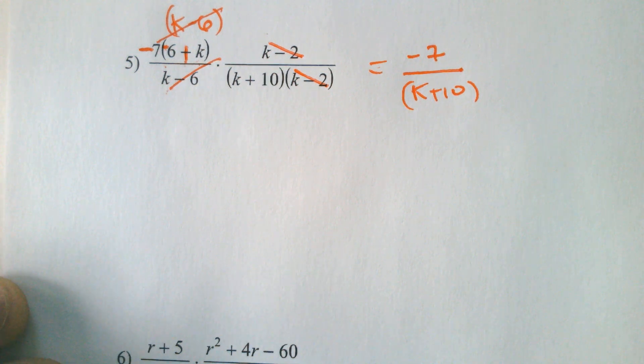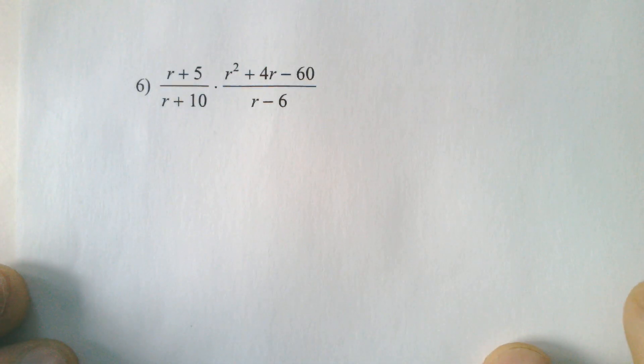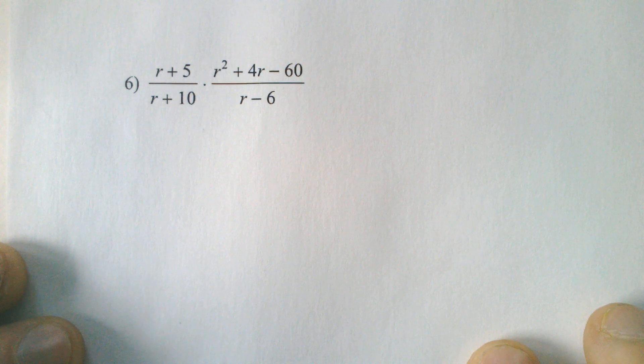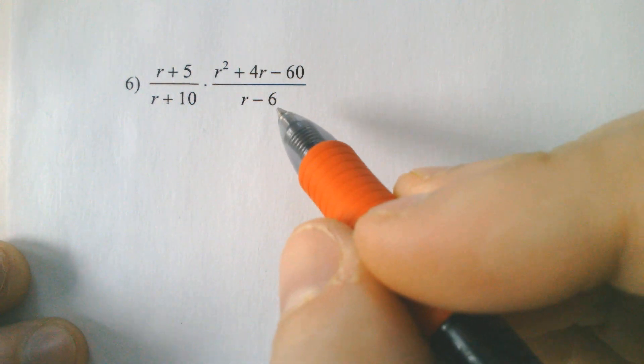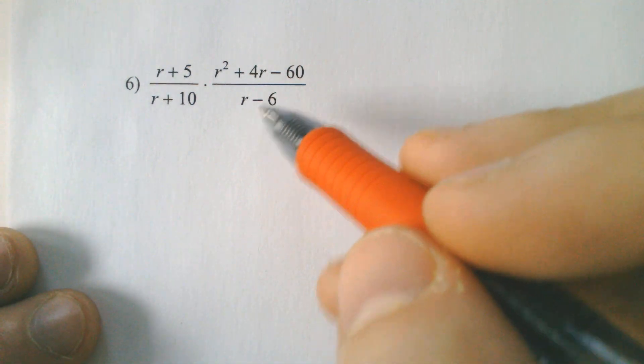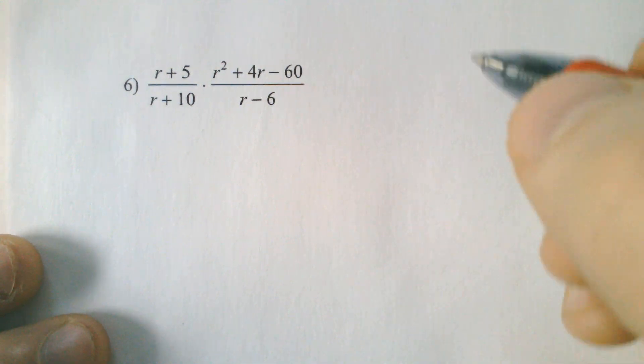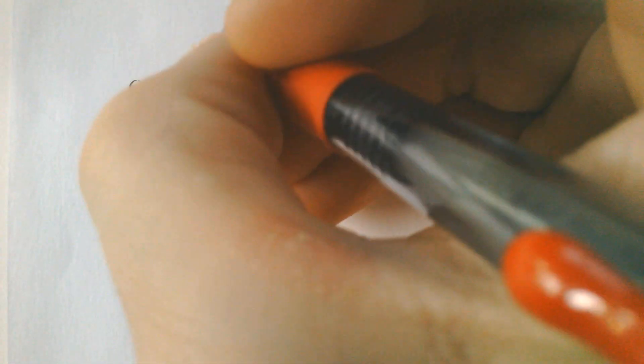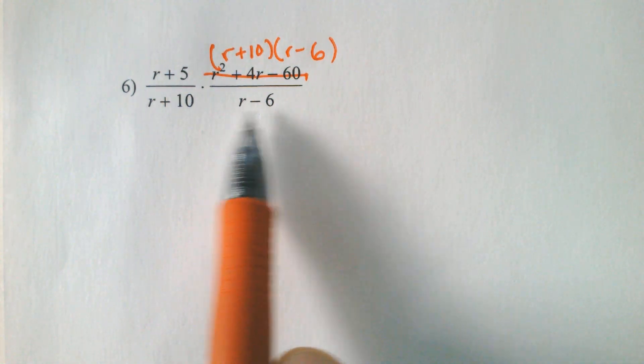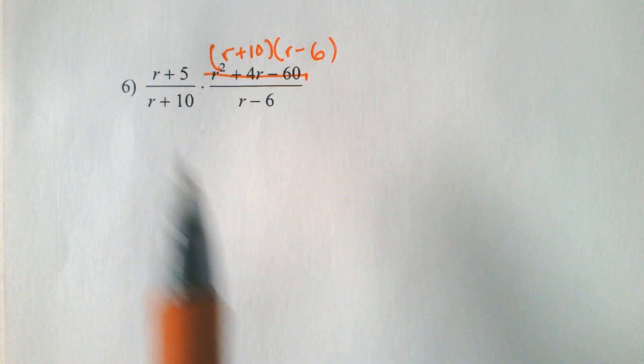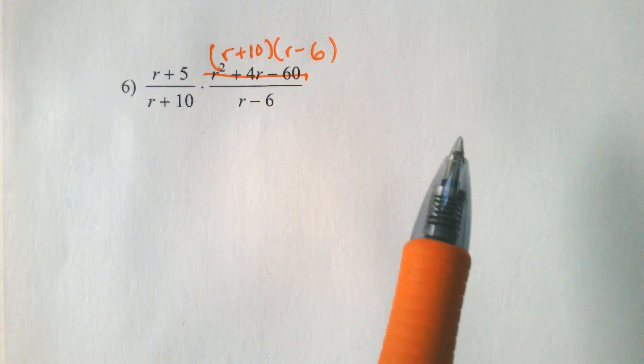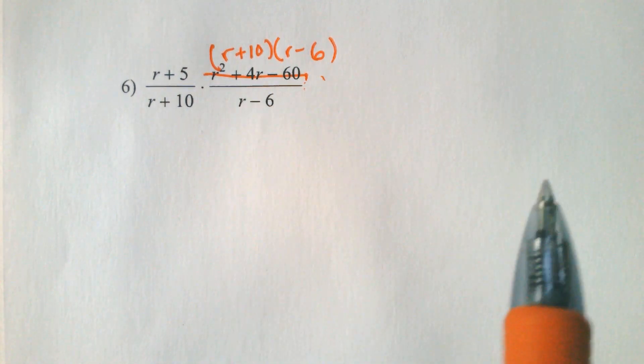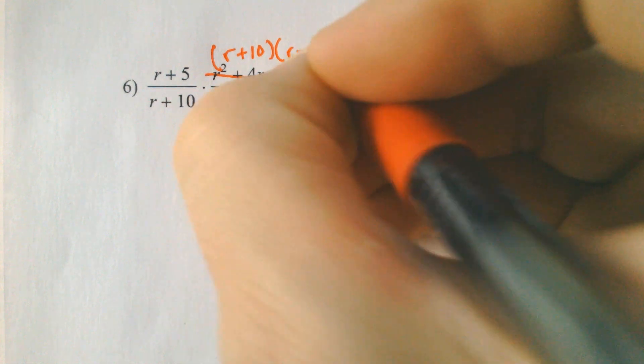We got a few more, only one more multiplication problem before we do division. Division doesn't really change much. All this really is is factoring. What multiplies to 60 but adds to 4? 10 and 6, and sometimes you can get a hint from the things that are around it because there was a r minus 6 here, and there was a r plus 10 there, so I could use that hint to kind of get my idea of what multiplied to 60 and added to 4.